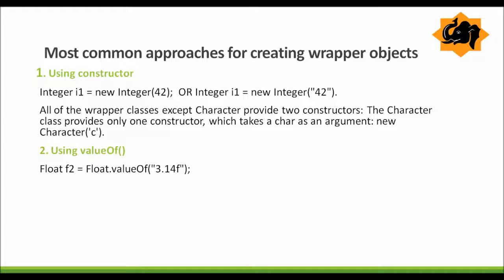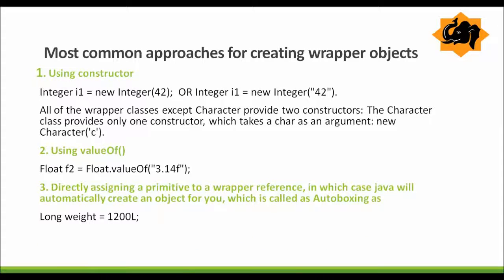Another approach is using valueOf. valueOf is a static method provided in the wrapper class — for example Float.valueOf() — where you can call this function and pass the argument. This will also convert the primitive type into a wrapper.